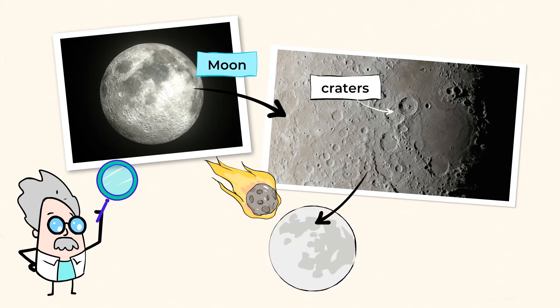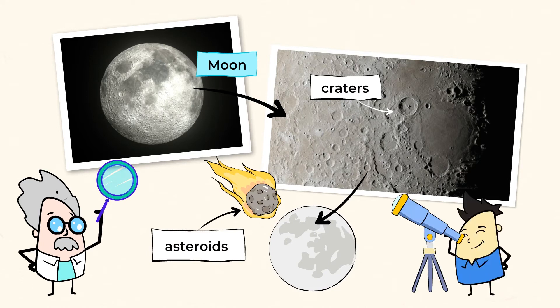Craters are made when chunks of rock, called asteroids, hit the moon's surface. We can even see some of the craters from Earth, because they're so big. Smaller craters can only be seen using a telescope. What else can we observe about the surface of the moon?